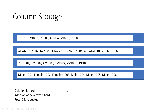Looking at the column storage diagram — notice the difference from row storage. The row key is repeated with each value. For example, row id 1001 has id value 1; row id 1002 has id value 2 — all values for the id column are stored together. Next, all values for the name column are stored together, identified by the row key. Similarly, all age values are stored together and all gender values are stored together. The representation on disk is very different from row-oriented storage.